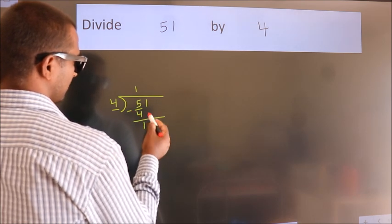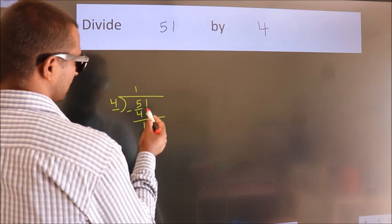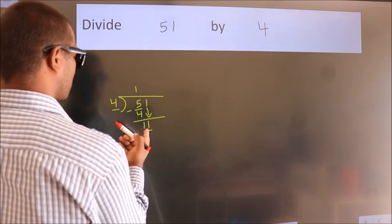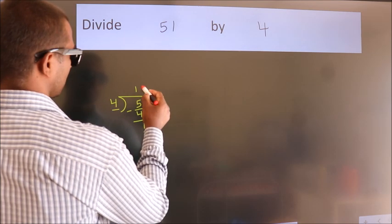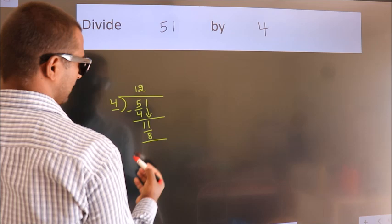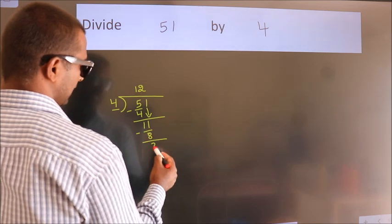After this, bring down the beside number. So 1 down, so 11. A number close to 11 in the 4 table is 4 twos 8. Now we subtract. We get 3.